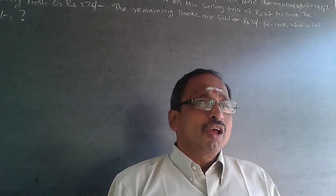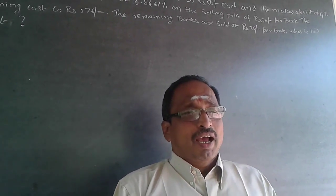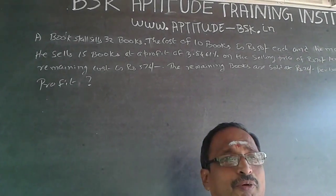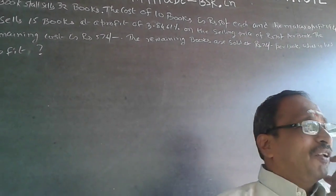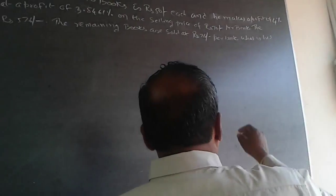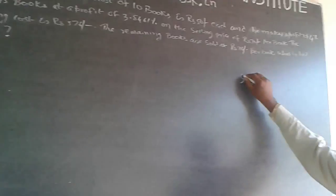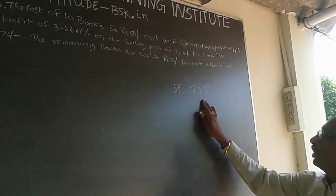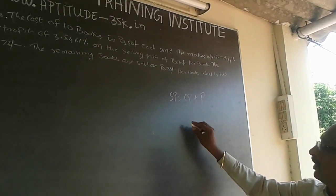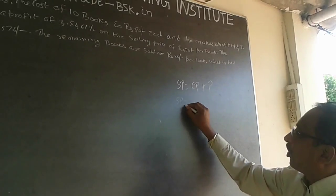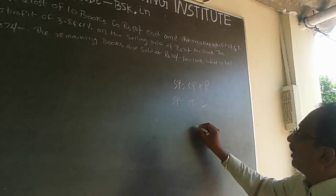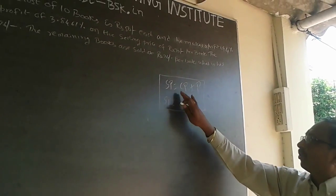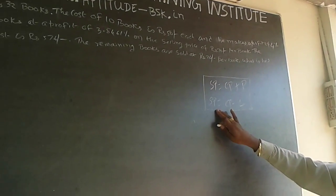Let us find out the cost price and selling price of all the books and find out the profit made. Whenever we talk about selling price and cost price: selling price will always be equal to cost price plus profit in case of profit, and selling price will be equal to cost price minus loss in case of loss. This is the formula for all your cost price and selling price problems.